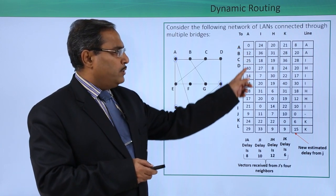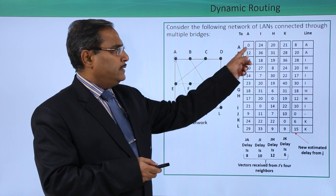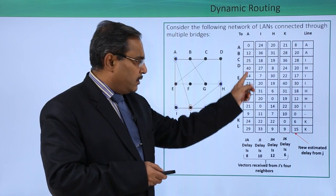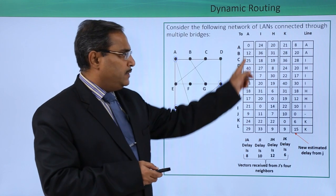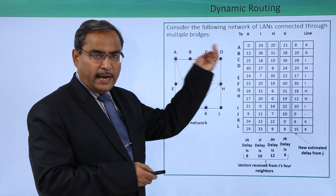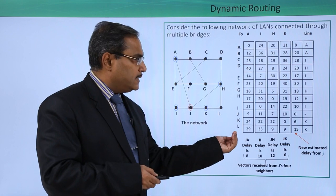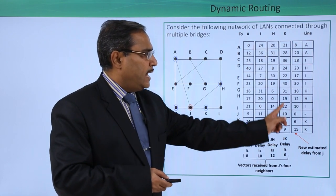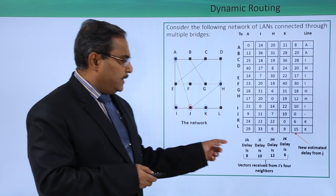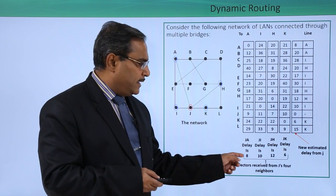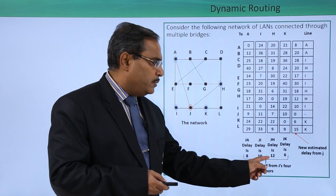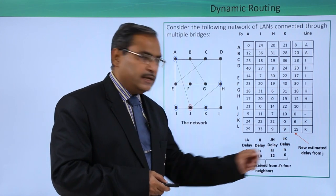Here you see this is the A routing table: from A to A the delay time is 0, from A to B the delay time is 12. These are the respective delays to reach from A to other bridges. This is the routing table for I, routing table for H, and this is K. J knows that J to A delay is 8 units, J to I delay is 10 units, J to H delay is 12 units, and J to K delay is 6 units.